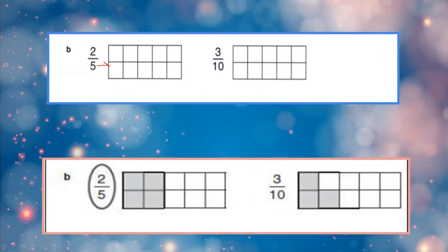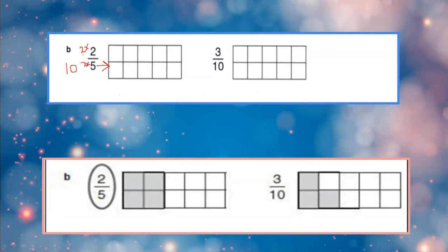Another example. The grid doesn't give 5 boxes — it gives 10. So you have to convert 2 upon 5 into tenths by multiplying by 2: numerator 2 becomes 4, giving 4 upon 10. Now I color 4 boxes and leave 6 colorless. What about 3 upon 10? They have already given 10 boxes in the denominator, so there is no need to change it — just color 3 boxes and leave 7 colorless.